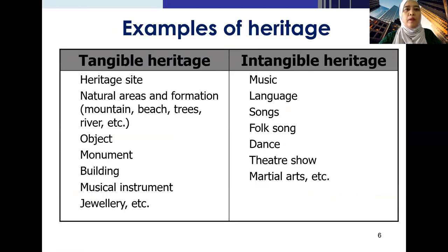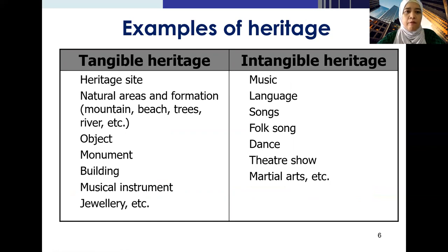More examples of heritage: for tangible heritage, we have heritage sites, natural areas and formations such as mountains, beaches, trees, and rivers. Also objects, monuments, buildings, musical instruments, and jewelry — all of these are tangible heritage.